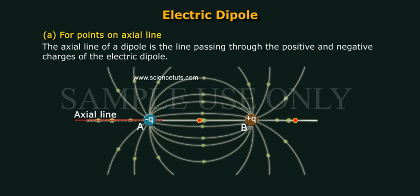For points on the axial line. The axial line of a dipole is the line passing through the positive and negative charges of the electric dipole.